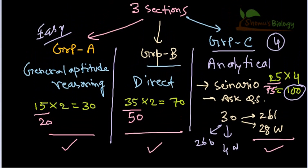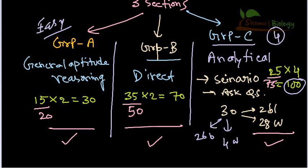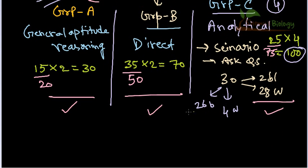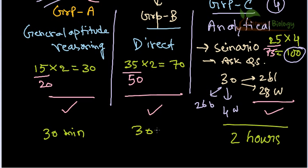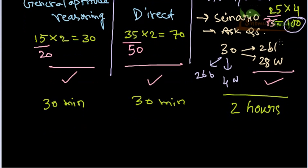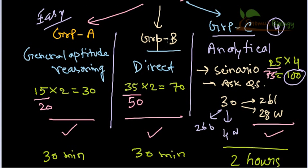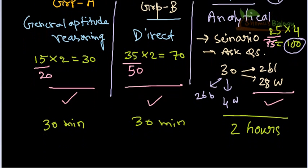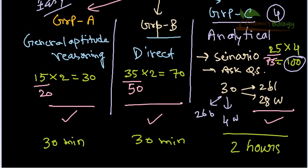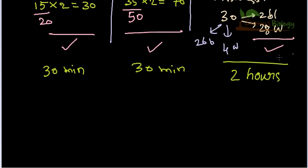Another important point is how to allocate time during the exam. You have three hours total. My suggestion is to give thirty minutes to Group A, two hours to Group C, and the remaining thirty minutes to Group B. This can vary student to student — if Group C feels easier and Group B is harder, give Group B more time. Group B questions are direct, so ticking answers won't take more than thirty to forty minutes if you know the content.